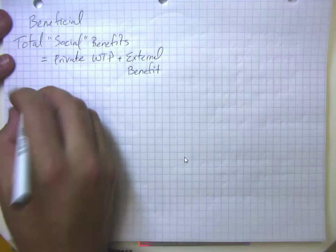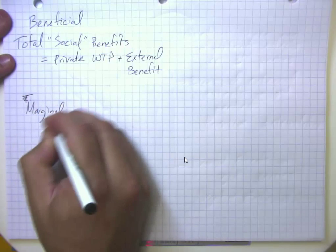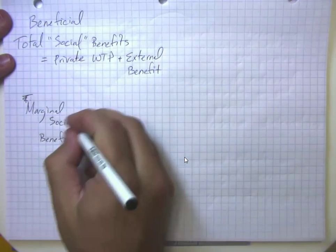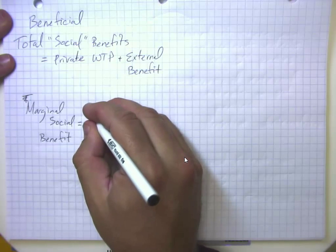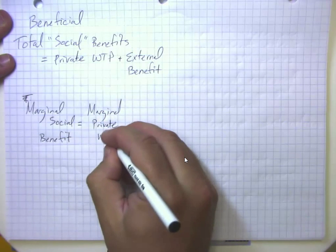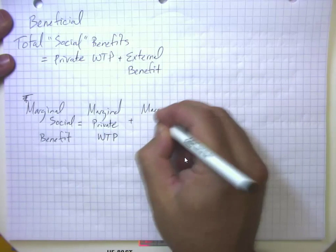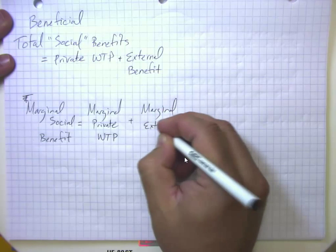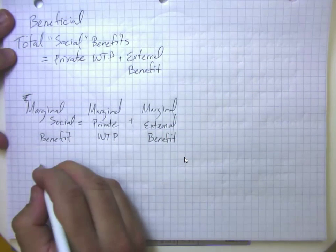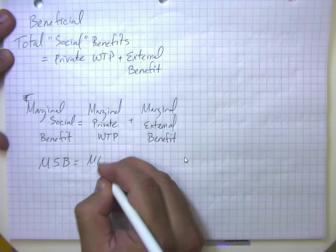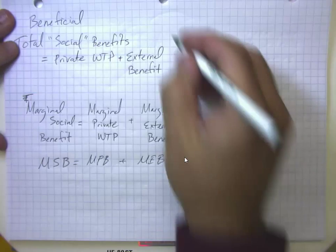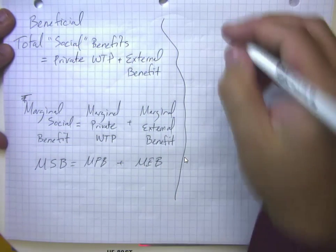We often want to look at the marginal social benefit. So what is the benefit of consuming one more of the product, or having one more produced? That would be the marginal private willingness to pay, plus the marginal external benefit. And because I'm lazy and I want to avoid giving myself carpal tunnel, marginal social benefit equals marginal private benefit plus marginal external benefit. So that's the happy case where we have beneficial externalities.